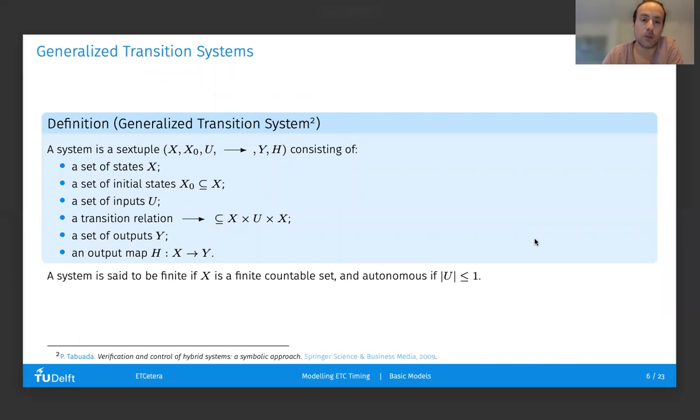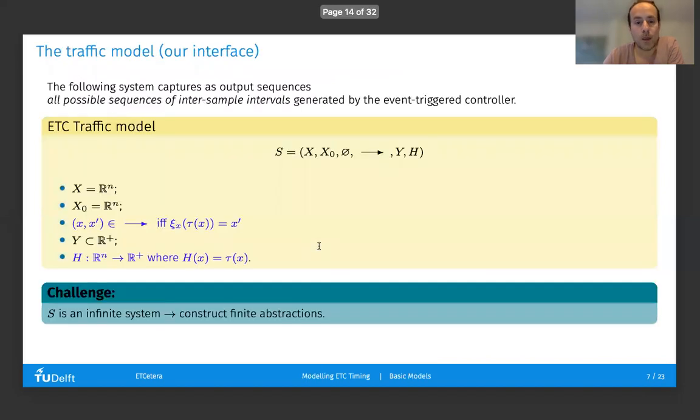We will use the notion of generalized transition system to describe the models we're constructing. This is simply a sextuple indicating the set of states and initial states, the set of inputs, a transition relation capturing the dynamics of the system, set of outputs, and an output map mapping state into outputs. In particular, we'll be interested in constructing a model that can let us know what are all possible sequences of inter-sample intervals generated by an event-triggered controller.